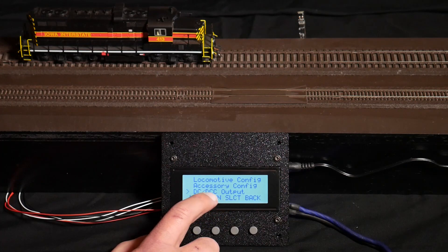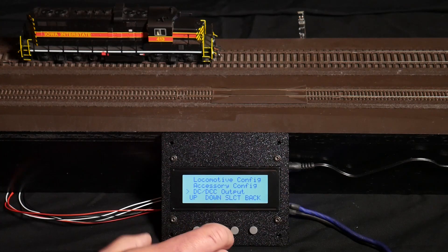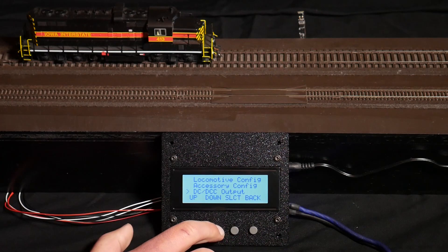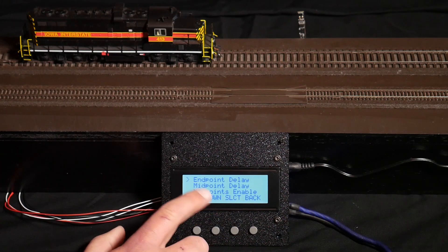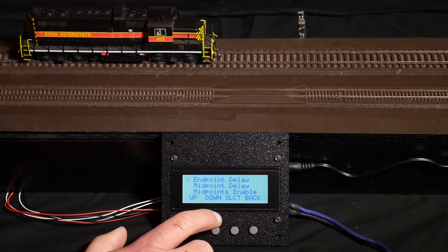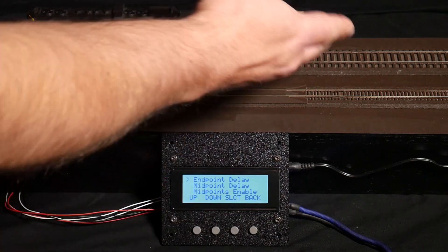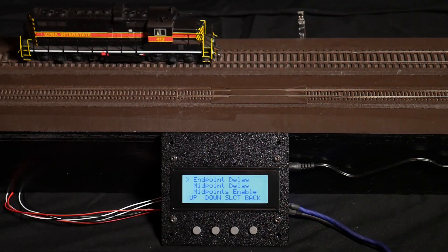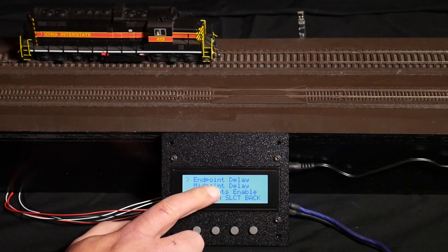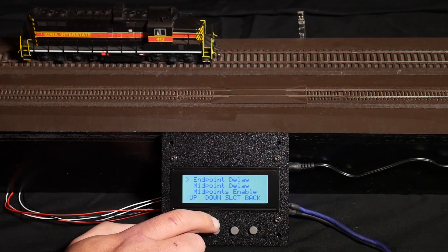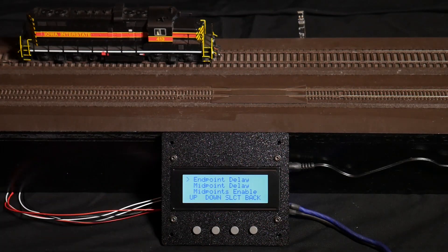You can also change the DCC versus DC output. This is a DCC only locomotive, so I'm not going to do that right now. You can configure the end point delay, which is how many seconds it will sit at either the left or the right end of the layout. You can configure midpoint delays, which is how long it will sit at any midpoint stop.